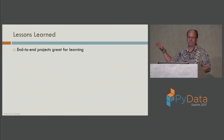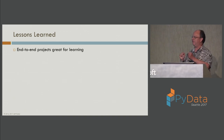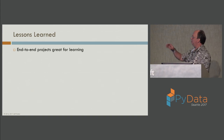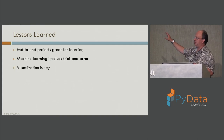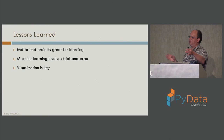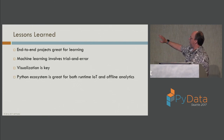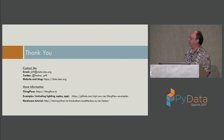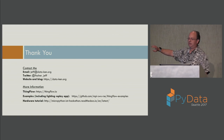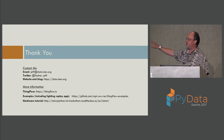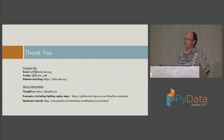Some parting thoughts and lessons learned: end-to-end projects are great for learning — it's more motivating to work on something with a complete real system as opposed to an artificial homework problem, and you learn more about how the pieces fit together. Machine learning has a lot of trial and error involved. Visualization is important both for machine learning and for understanding sensor data in the IoT world. And the Python ecosystem is great for this kind of stuff. All the code and Jupyter notebooks are online, ThingFlow has its own page, and there's a hardware tutorial as well.